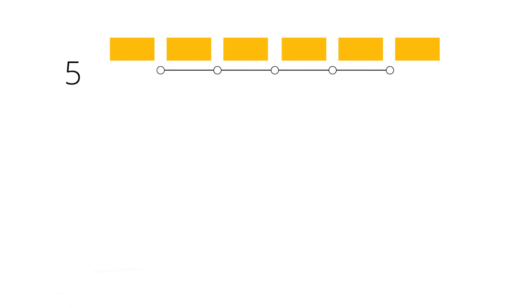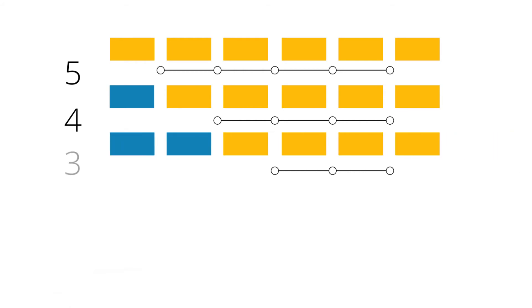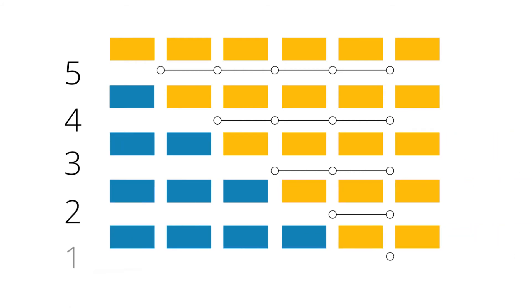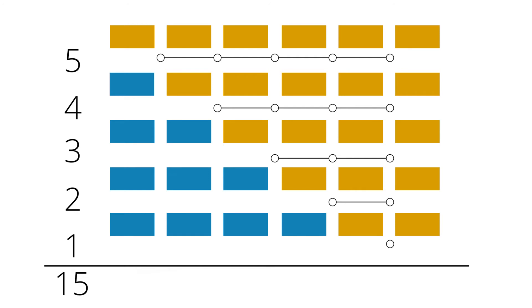In the first step, we have to do 5 comparison operations to find the smallest element. In the second step, we have to do 4 comparisons. In the third step, 3; in the fourth, 2; one in the fifth and none in the sixth. It doesn't matter whether the elements are already sorted or not. To find the smallest element, we have to search the entire remaining right part in each step. In total, we arrive at 15 comparison operations.